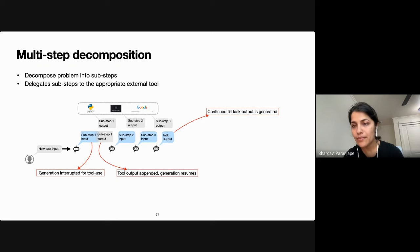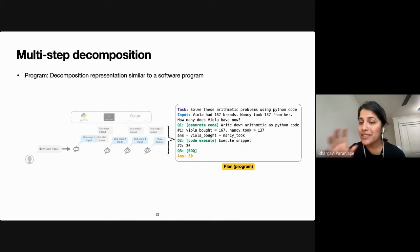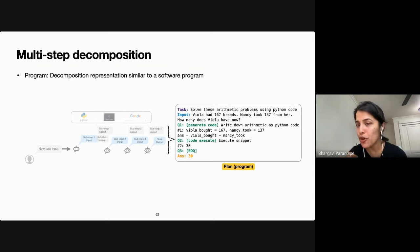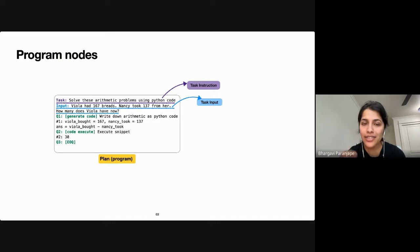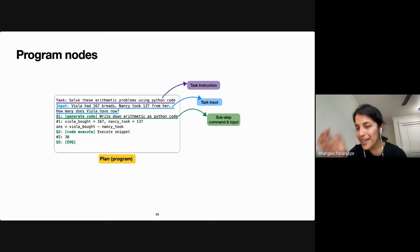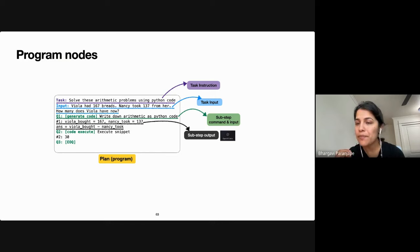This decomposition is formatted like a software program in a high-level language with sequential instructions and function calls. A program consists of a task instruction — for example, 'solve arithmetic problems using Python code' — followed by the input, then the decomposition with named and numbered sub-steps, each with an input and output. The input to the code generation sub-step would be the instruction to write arithmetic as Python code plus the original math word problem, and the output is the code snippet from OpenAI Codex. The program ends with an end-of-program token and the final answer.